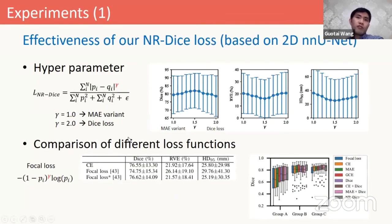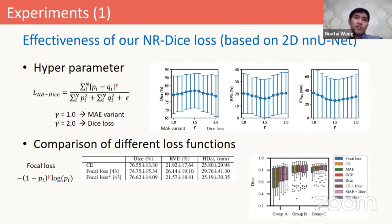For experiments, we first investigate the hyperparameter gamma for our noise-robust Dice loss. As mentioned before, when gamma equals 1 this is a variant of MAE loss, and when gamma equals 2 this is the standard Dice loss. We changed gamma from 1.0 to 2.0. As you can see, the performance increases at the beginning and then decreases at a later stage. The optimal value for gamma is around 1.5. This is a generalization of the Dice loss and MAE loss that outperforms both of them. So we set gamma to 1.5 in the following.